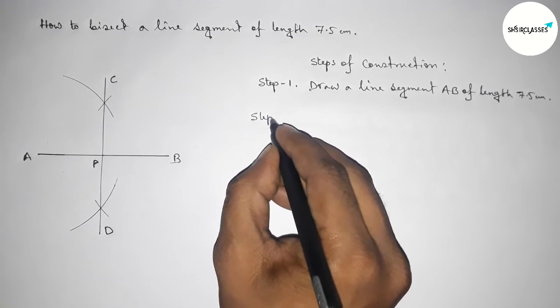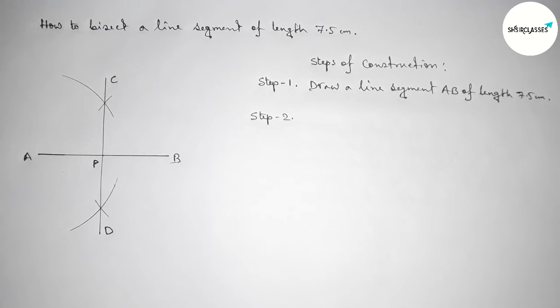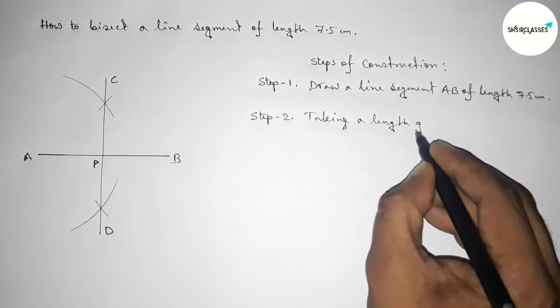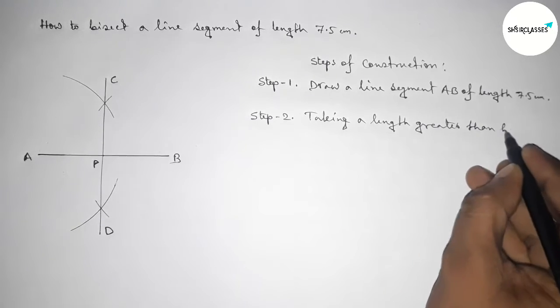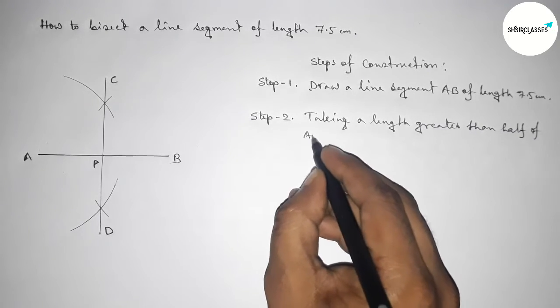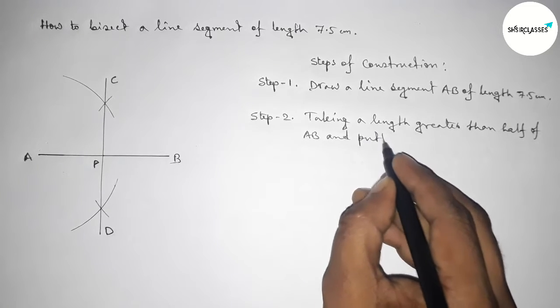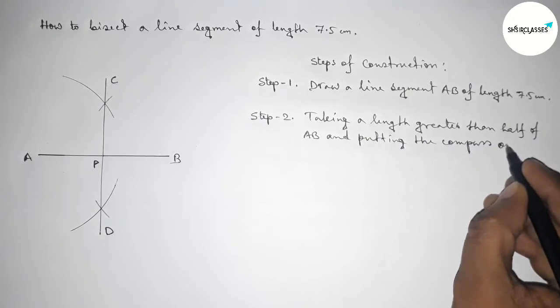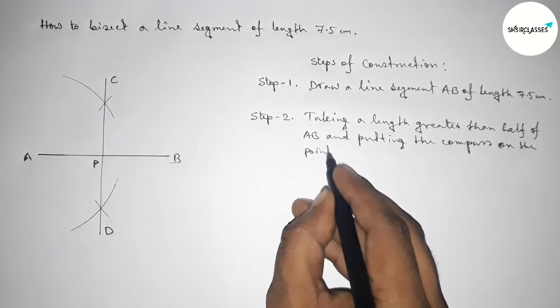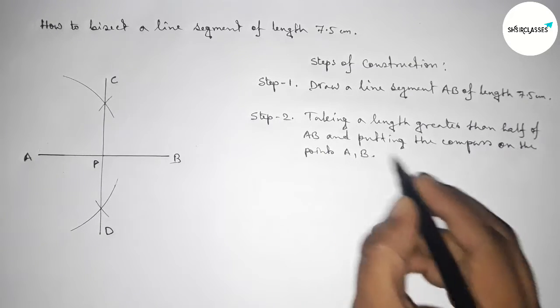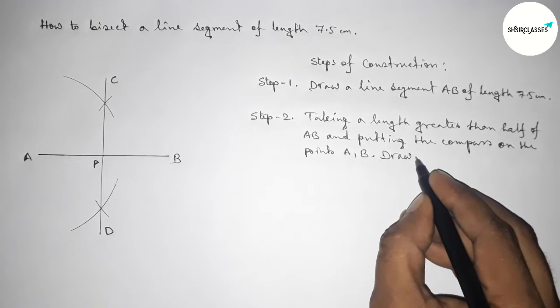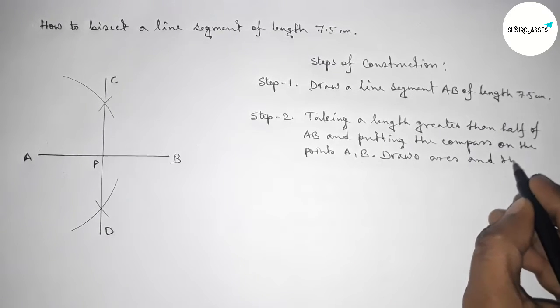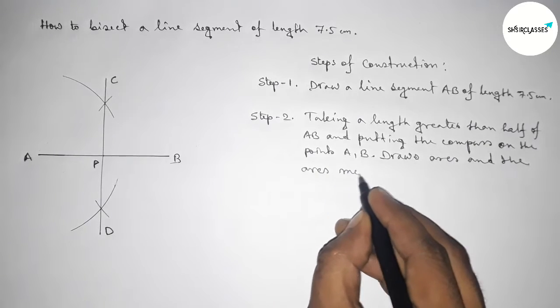Step number two: so first we have to take a length greater than half of AB. So taking a length greater than half of AB by using compass and putting the compass on points A and B, and drawing arcs. And arcs meet at two points.